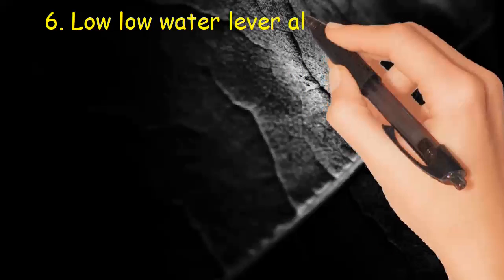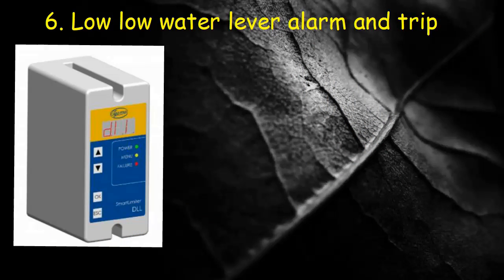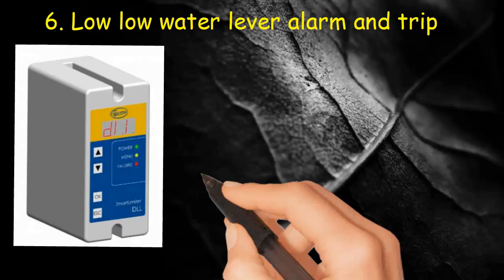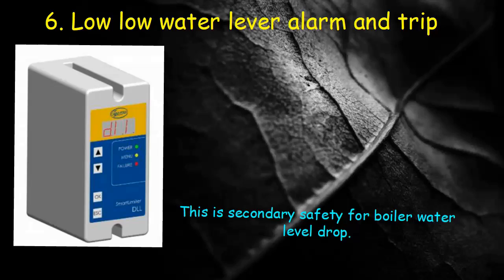Low low low water level alarm and trip. If water level falls below low water level alarm, then burner will stop firing to prevent boiler shell from damage due to excessive heat from burner flame. This is secondary safety for boiler water level drop.